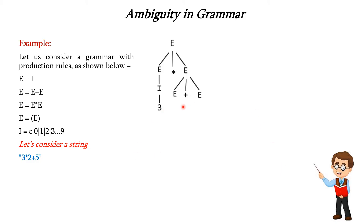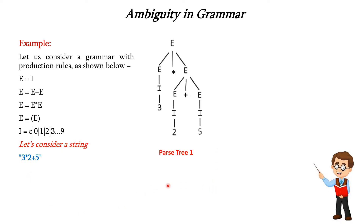This e can be written as i, and i is written as 2. The other e can be written as i, and i is written as 5. If we scan from left to right, we get 3 into 2 plus 5, which matches the input string. So this is parse tree number 1.